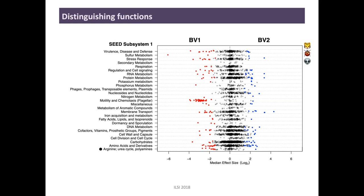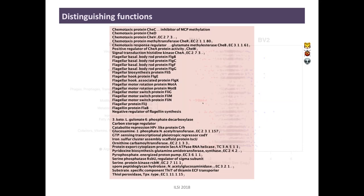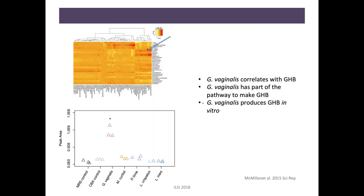In this same dataset, we also did metabolomics, and one of the most differential metabolites we found was gamma-hydroxybutyrate (GHB). Doing a correlation, G. vaginalis abundance correlates with GHB. We then looked in the metatranscriptome and saw that G. vaginalis has the key pathway that can produce GHB. Then looking in culture across a series of species commonly found in the vagina, G. vaginalis is the only one that makes GHB in culture. So we can correlate the composition, the metatranscriptome, and the metabolome, and then validate that.